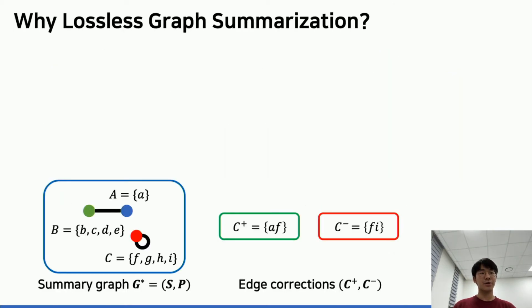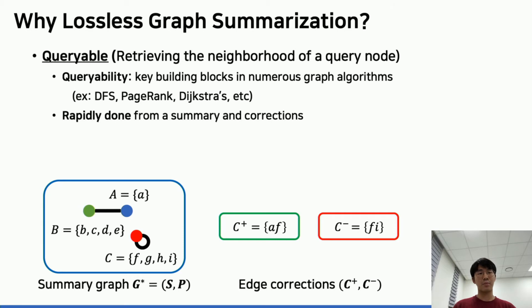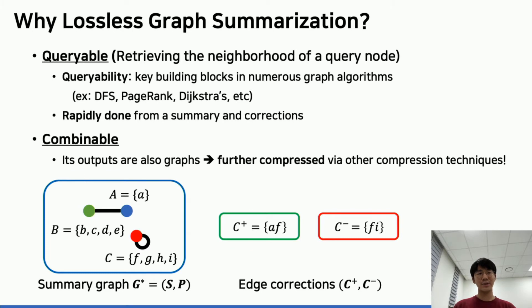What makes lossless graph summarization stand out? In fact, it has many desired properties. First, it is capable of retrieving the neighborhood of a query node, which is key for most graph algorithms such as DFS, PageRank, and Dijkstra. Furthermore, the retrieval can be done rapidly. Another cool thing is, since the output representations still consist of graphs, we can further compress them by using other compression techniques.